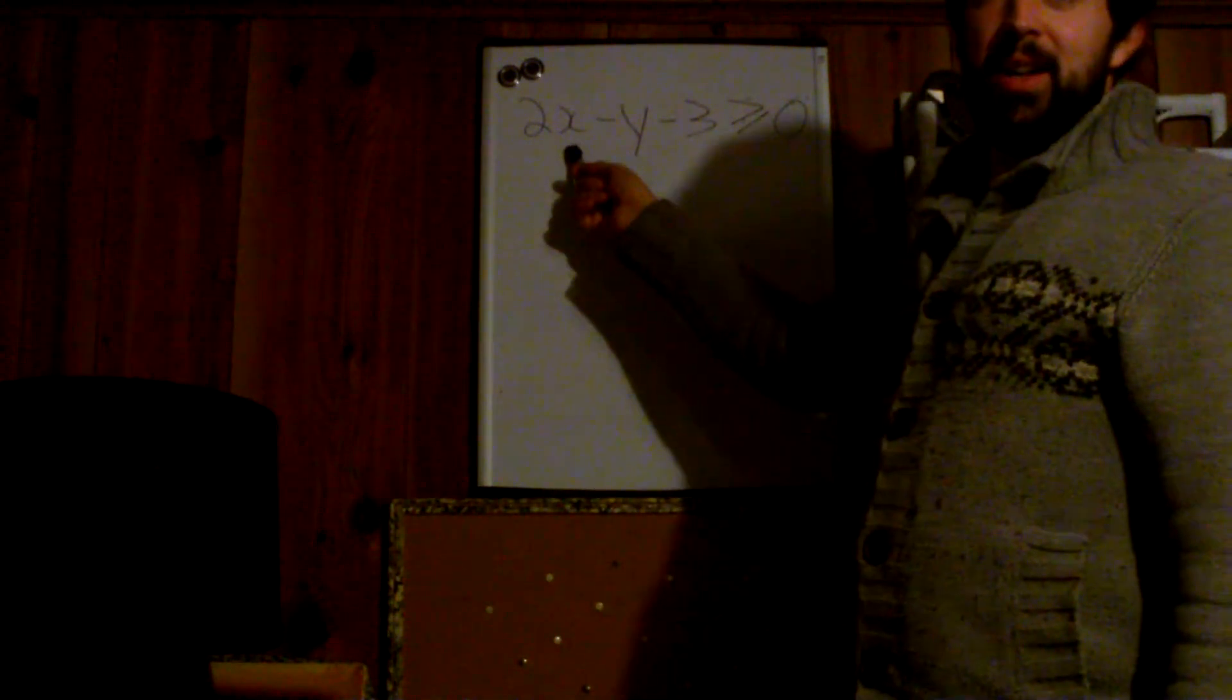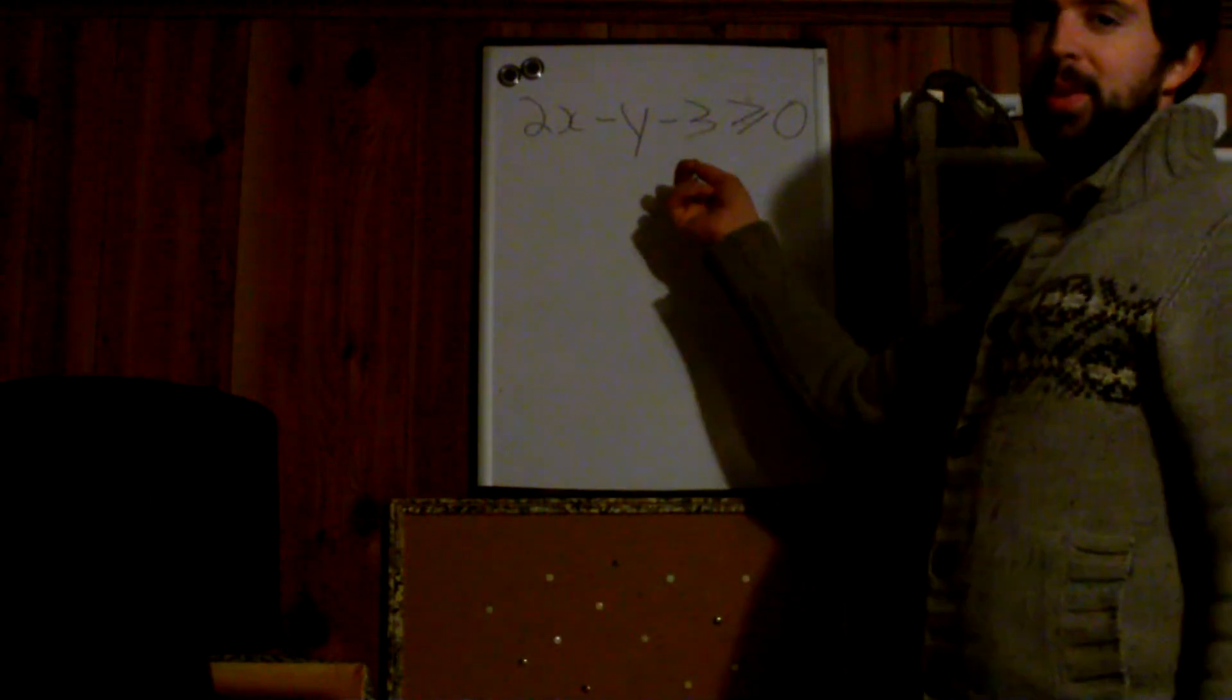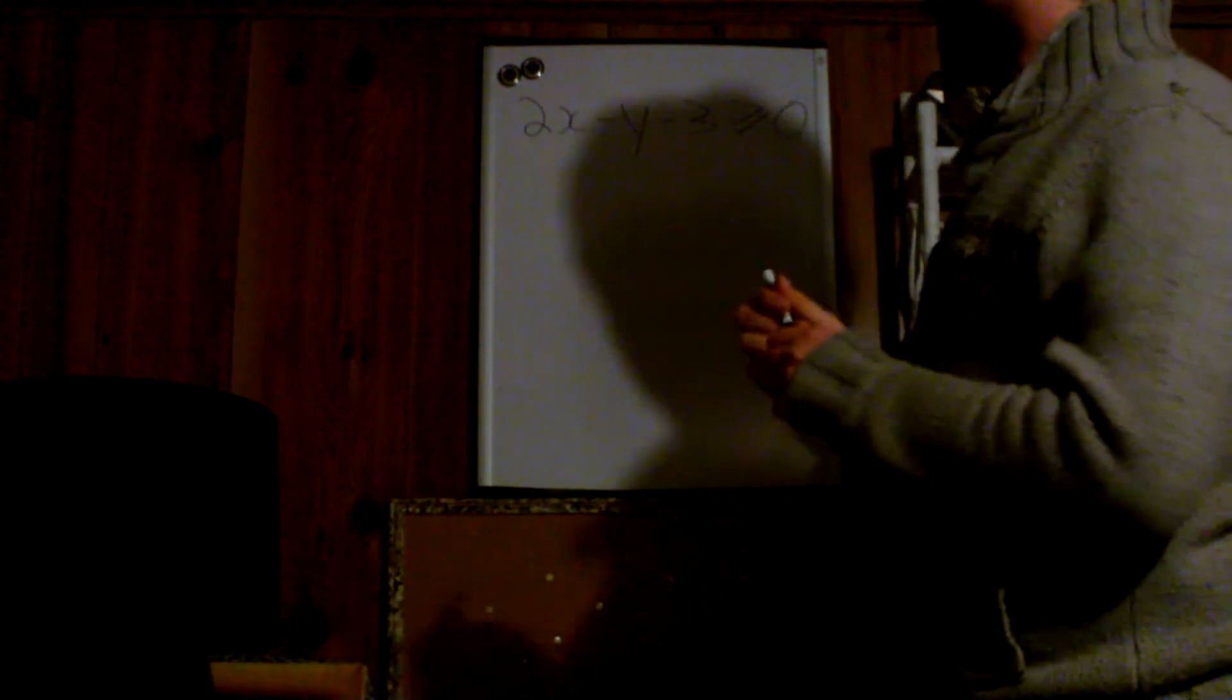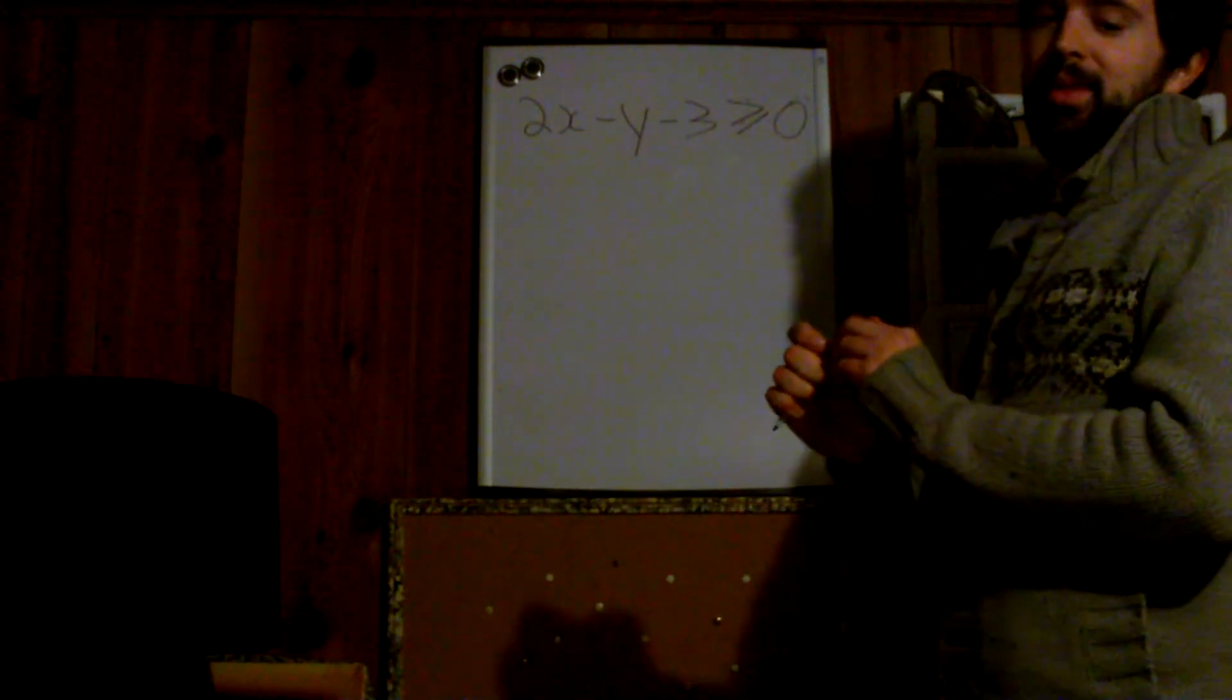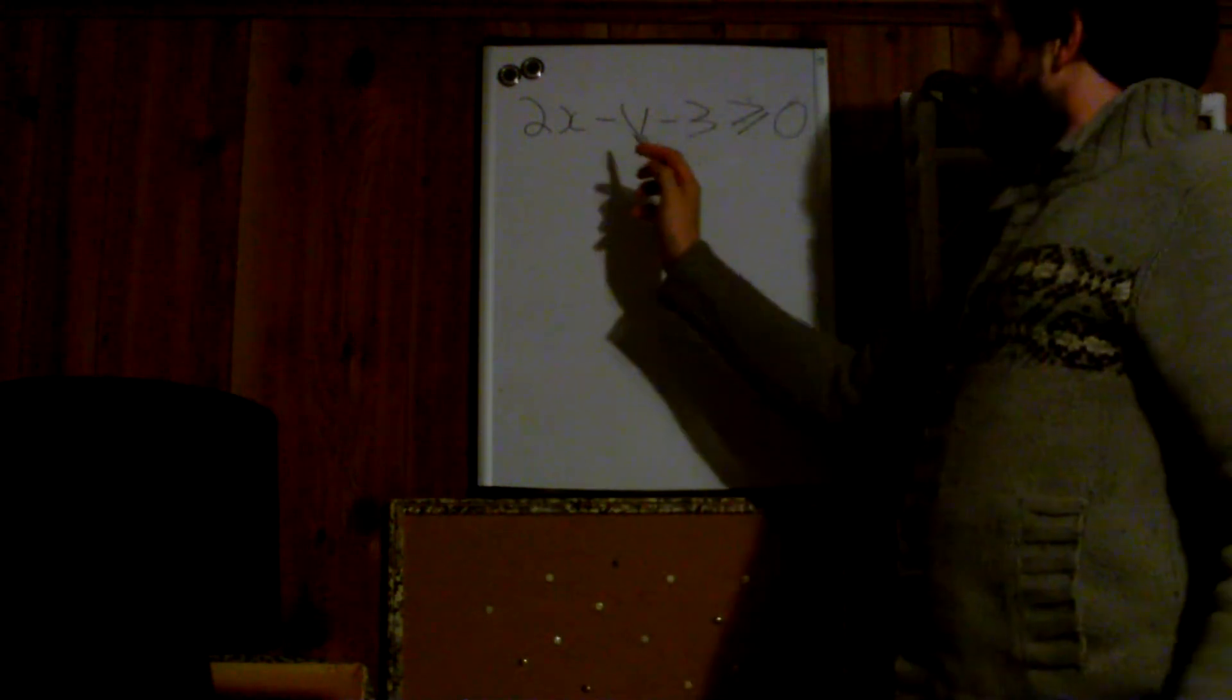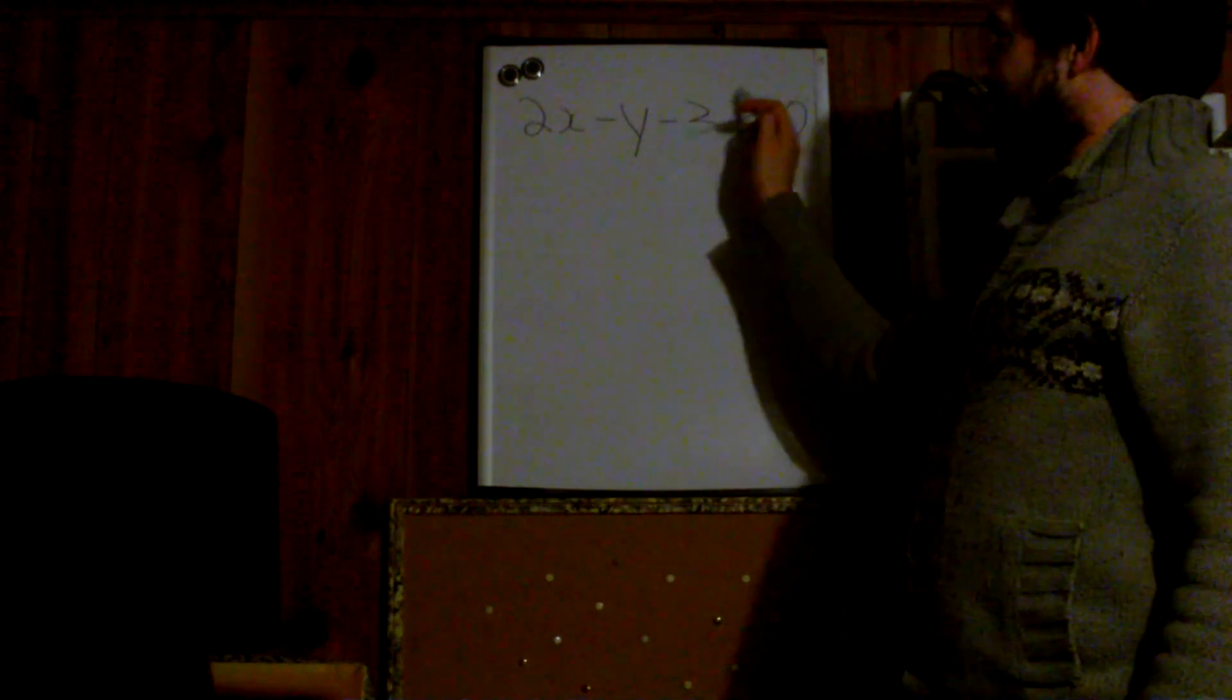So this is not in y equals mx plus b form. If we want to graph this, we got to change some stuff around. What's the first thing we're going to have to move? 2x, correct. The only thing we want left on the left side of this sign